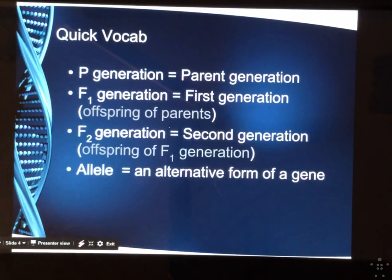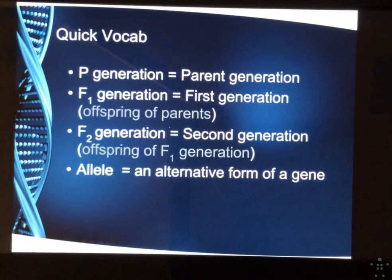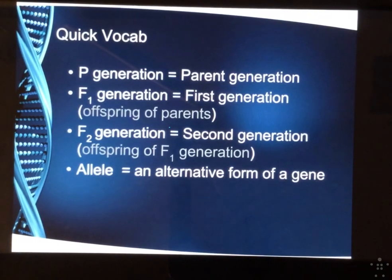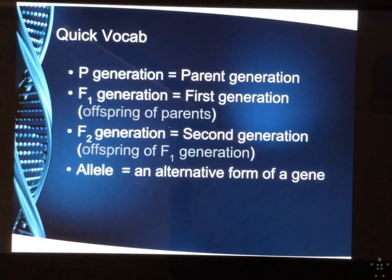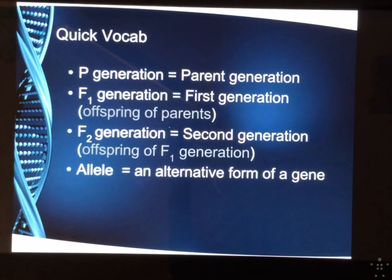Quick vocab recap: if we see a P, we're talking about the parent generation. F1 is the first generation produced by the parents. F2 are the offspring of the F1 generation. An allele is an alternate form of a gene. For example, eye color — you can have brown eyes, green eyes, and blue eyes.